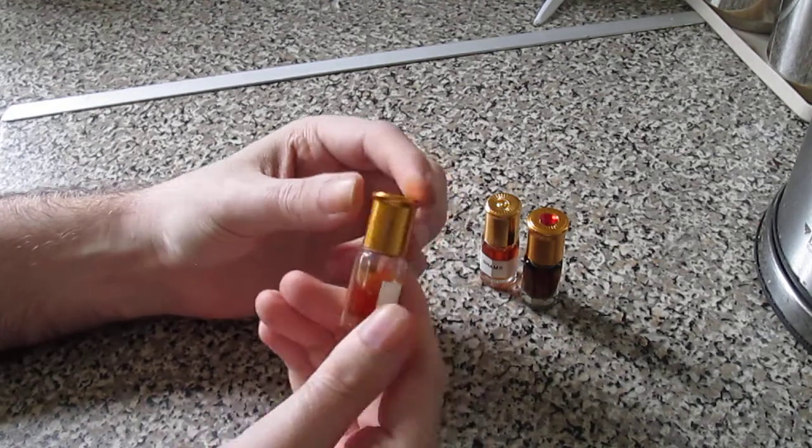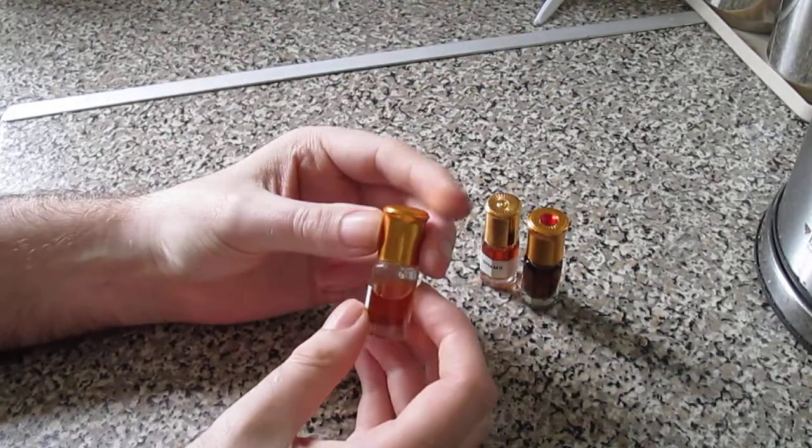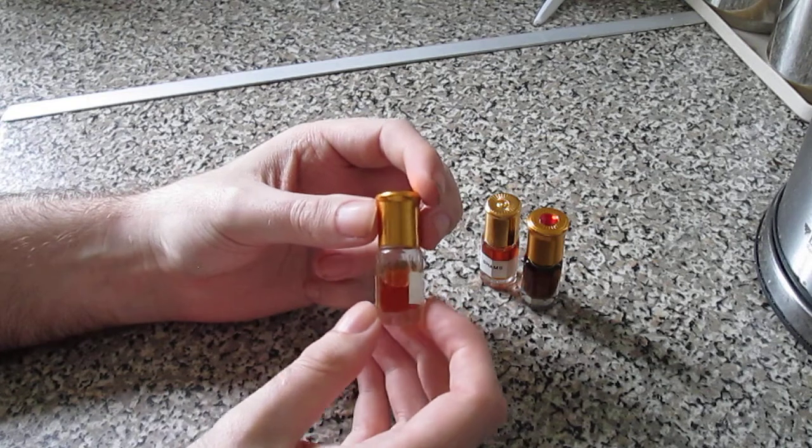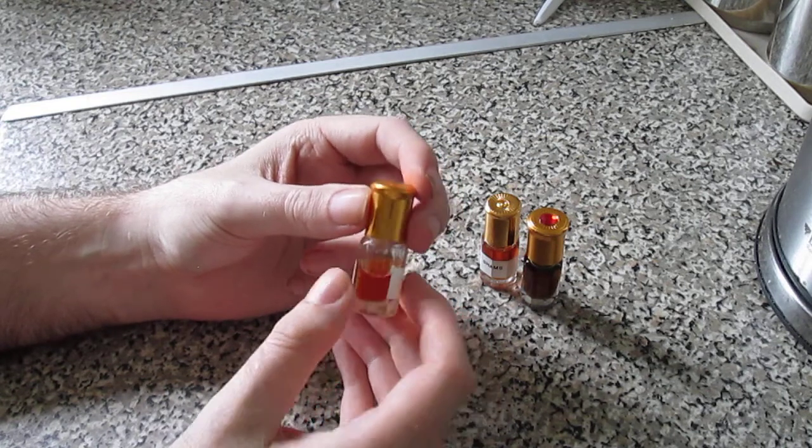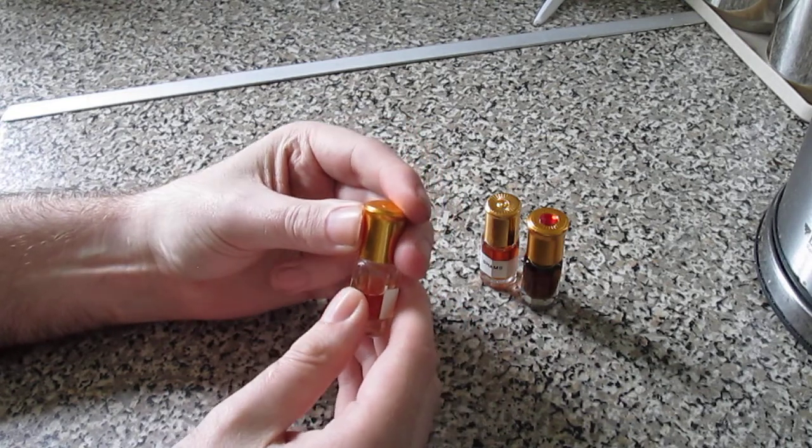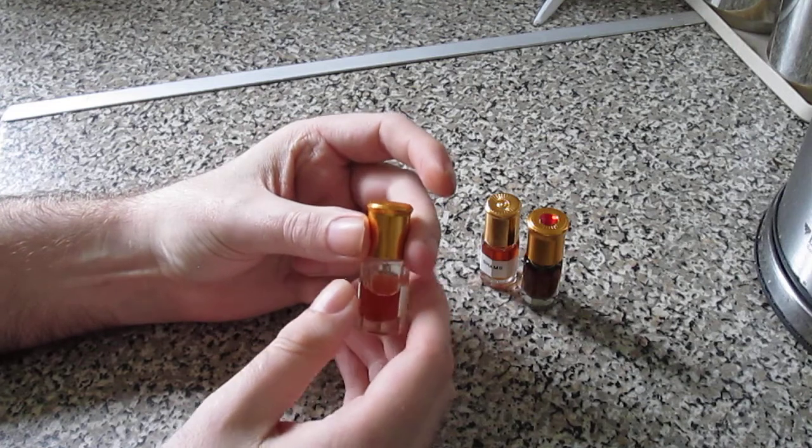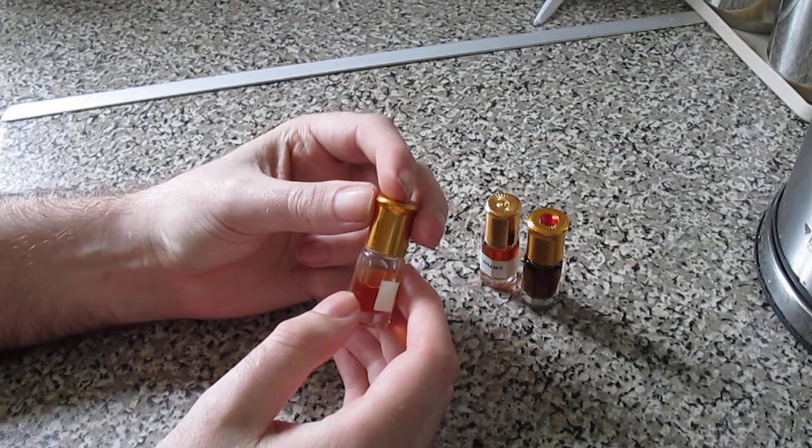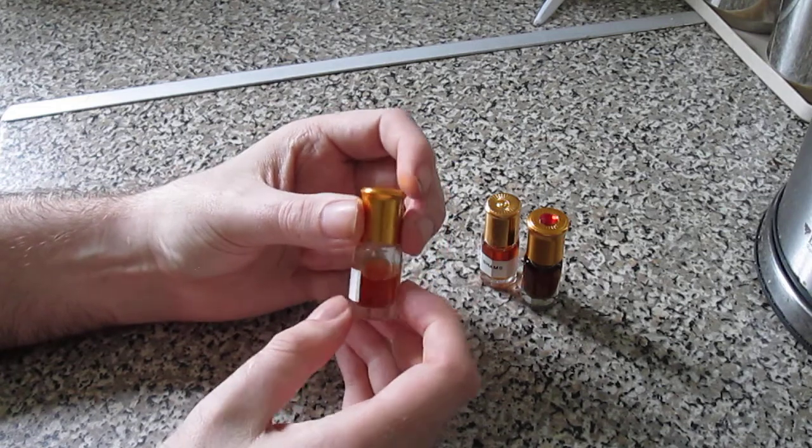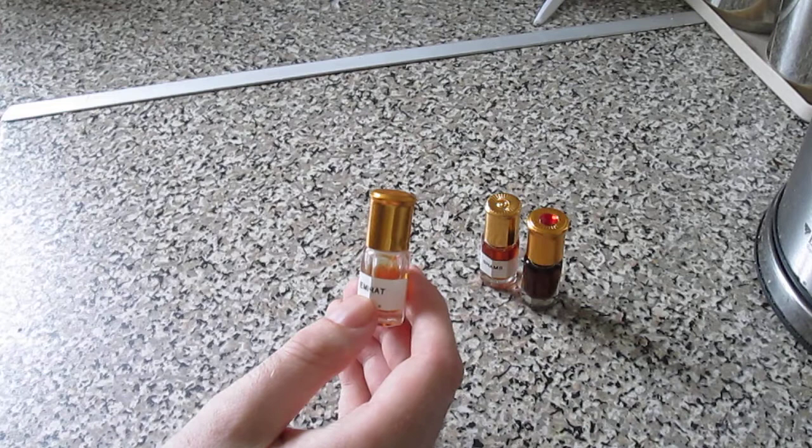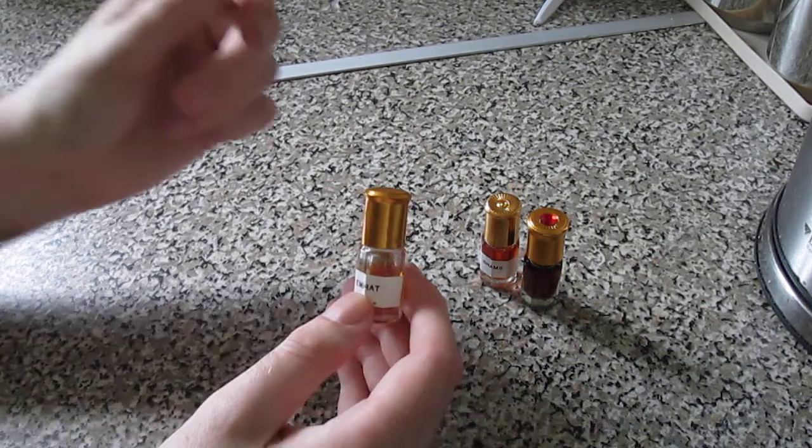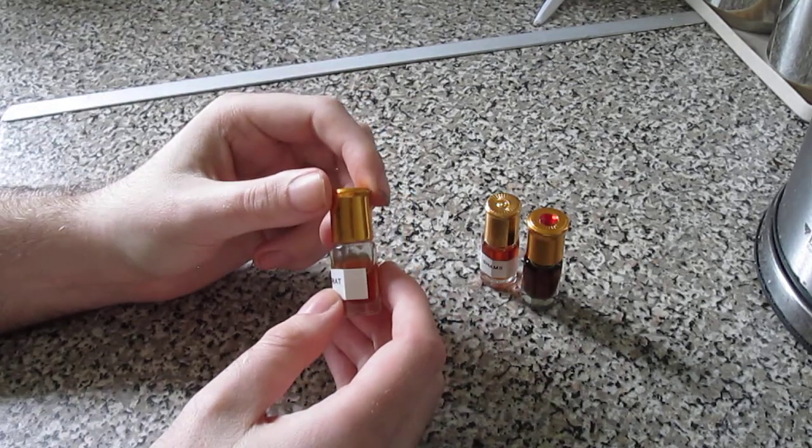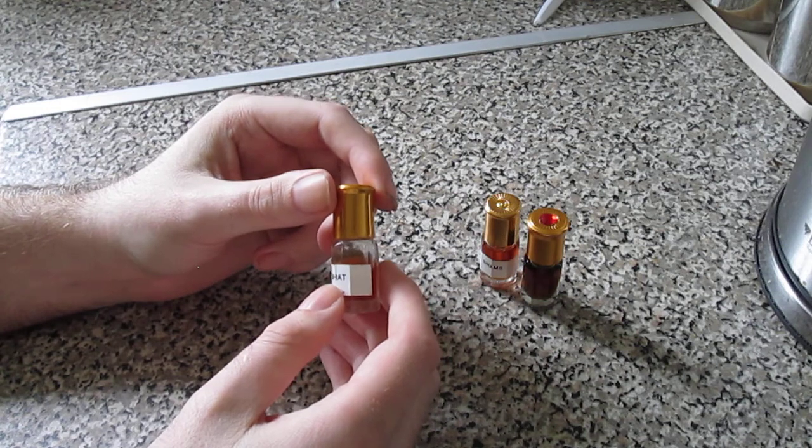Next up we've got Mokalat Emirates. It's the same color as Shams. Now this one is one of my favorites, I use it quite regular. It's a nice warm oud with a bit of amber and you get the rose on the top as well. It's very well blended, nothing is too much. Everything is in proportion so you get equal amounts of the rose, amber, and the oud.